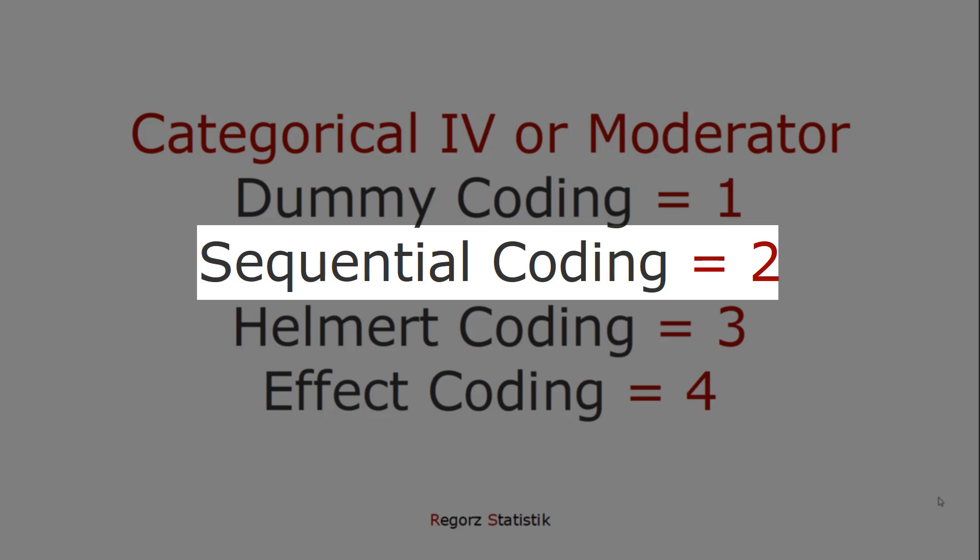Sequential coding, I use that if I have an ordinal predictor. There, the two neighboring categories are compared. So in our example, 1 to 0, 2 to 1, 3 to 2.